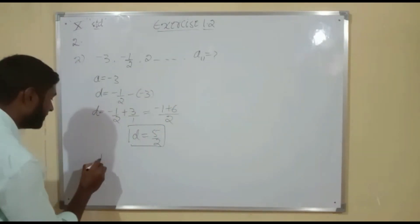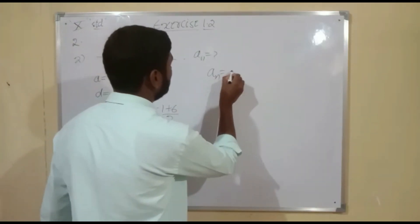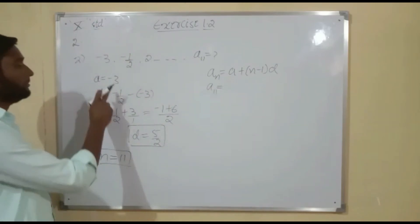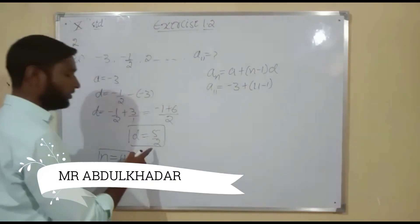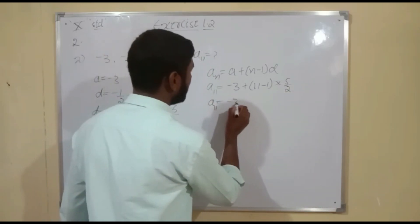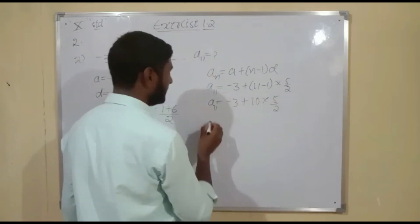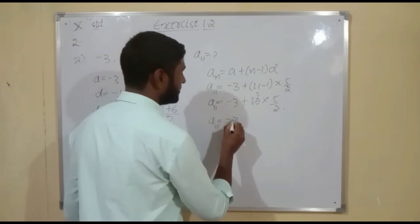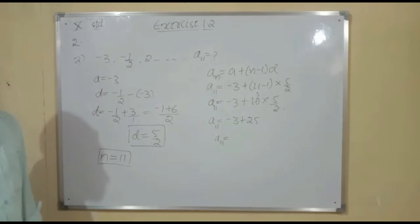Using the formula An equals A plus (n minus 1) into D: A11 equals minus 3 plus (11 minus 1) into 5/2, which is minus 3 plus 10 into 5/2. Simplifying, 10 divided by 2 is 5, and 5 times 5 is 25. So A11 equals minus 3 plus 25. Since the signs are different, we subtract and keep the sign of the bigger number. 25 is the bigger number with a plus sign, so A11 equals 22.